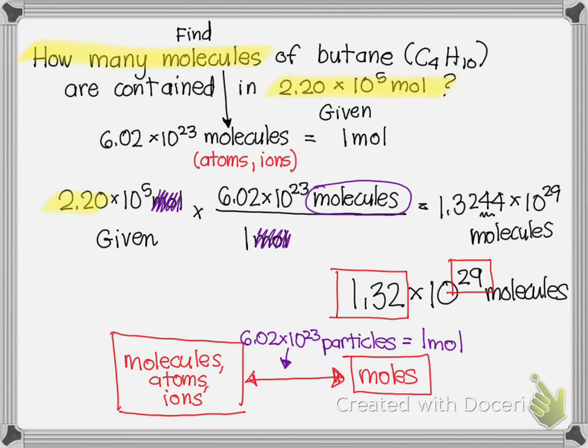Specifically, like in this problem, if you're given moles and asked to find a small unit like molecules, atoms, or ions, you will multiply by Avogadro's number.